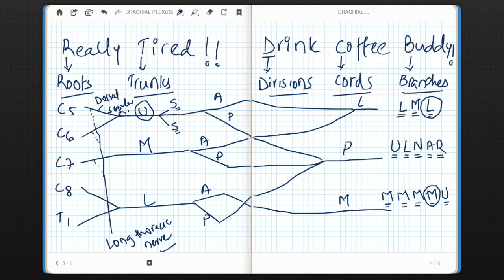So these are the branches given by cords, trunks, and roots directly. This is how you can remember the formation of brachial plexus. Hope you have understood well. Thanks for watching.